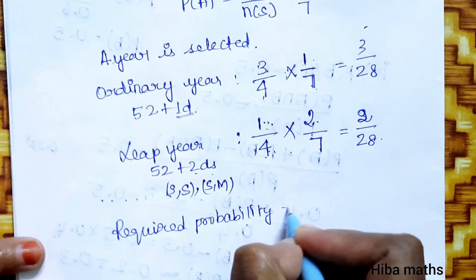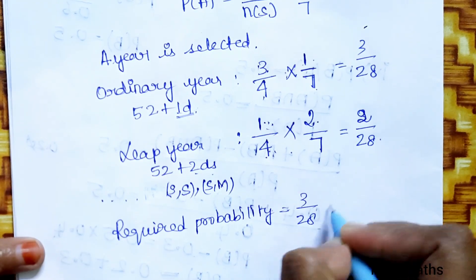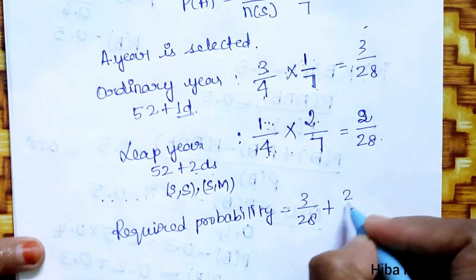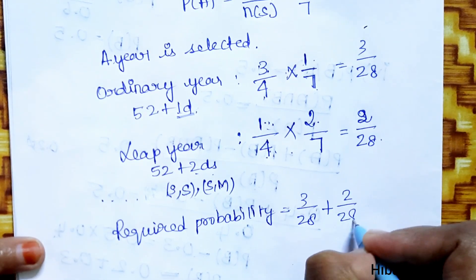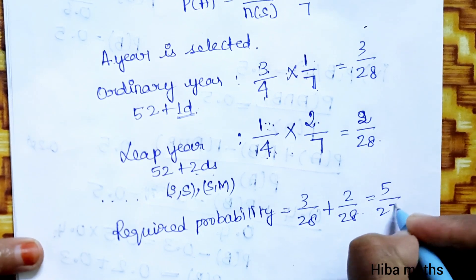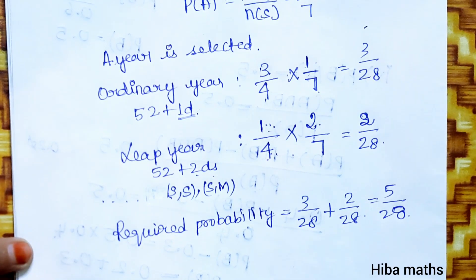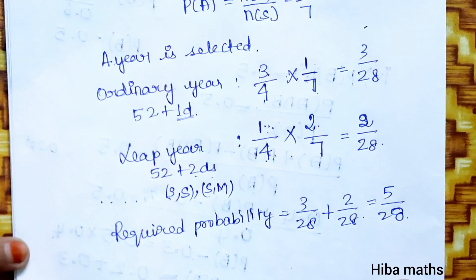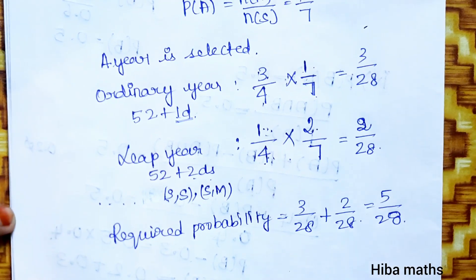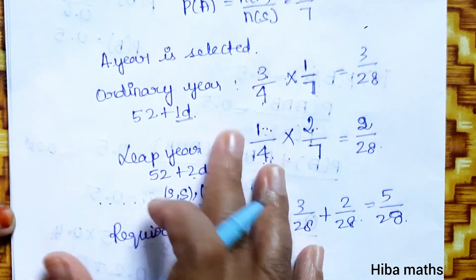The required probability is equal to 3 by 28 plus 2 by 28, that is 5 by 28. This is the answer for the condition of an ordinary year, not a leap year.